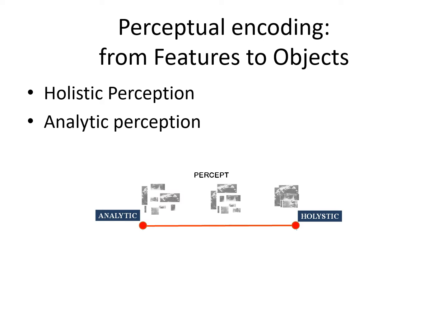In the domain of perception, researchers are supporting two types of hypotheses. One is the analytic hypothesis and another is holistic. Analytic assumes that all perceptual processes are conducted on individual features, while the holistic hypothesis assumes that all features are combined together and then perception operates on whole objects.